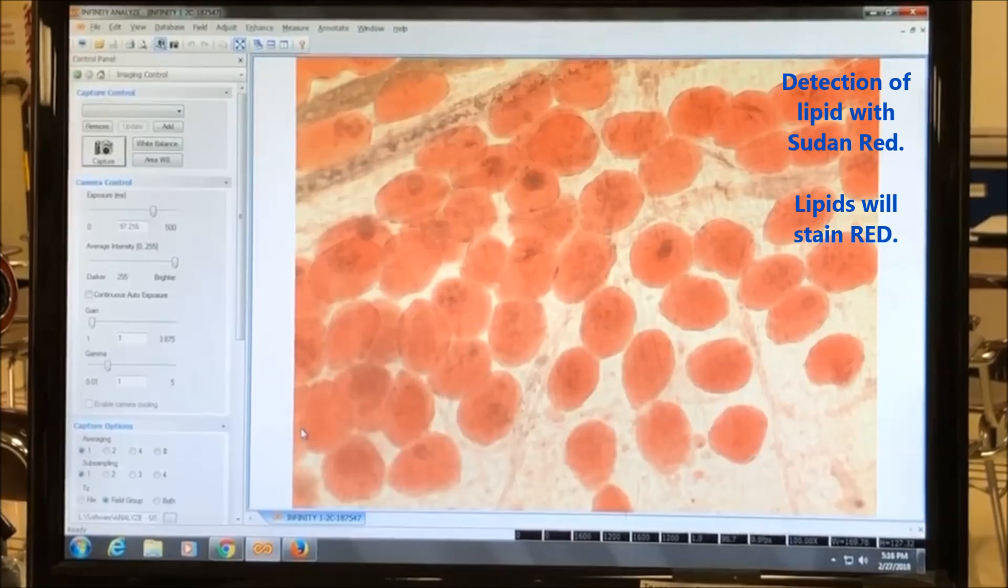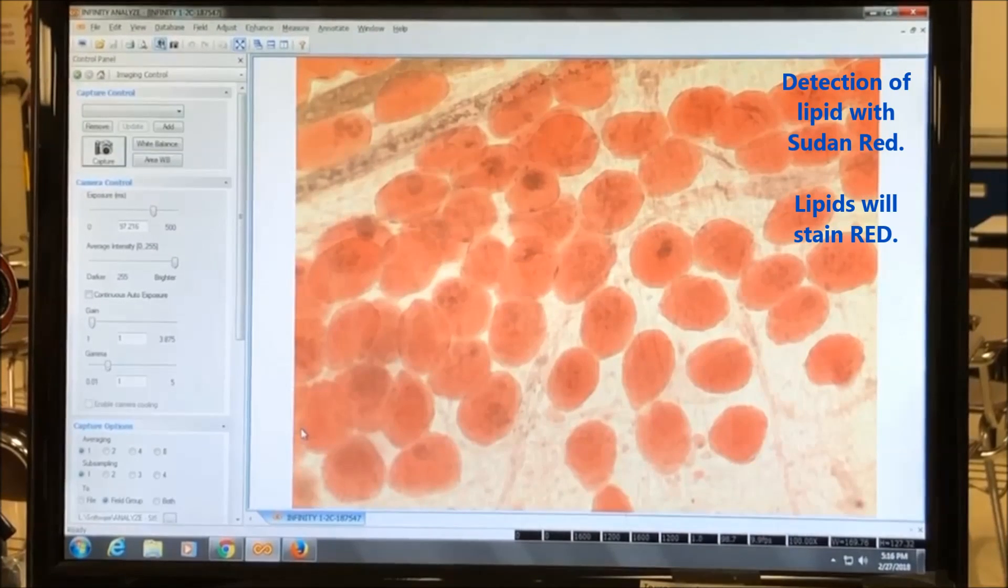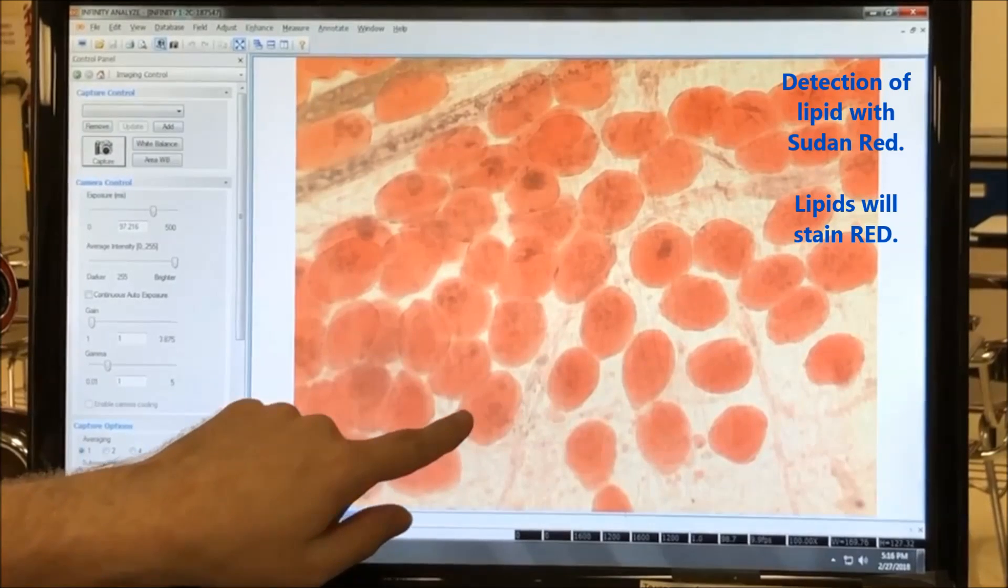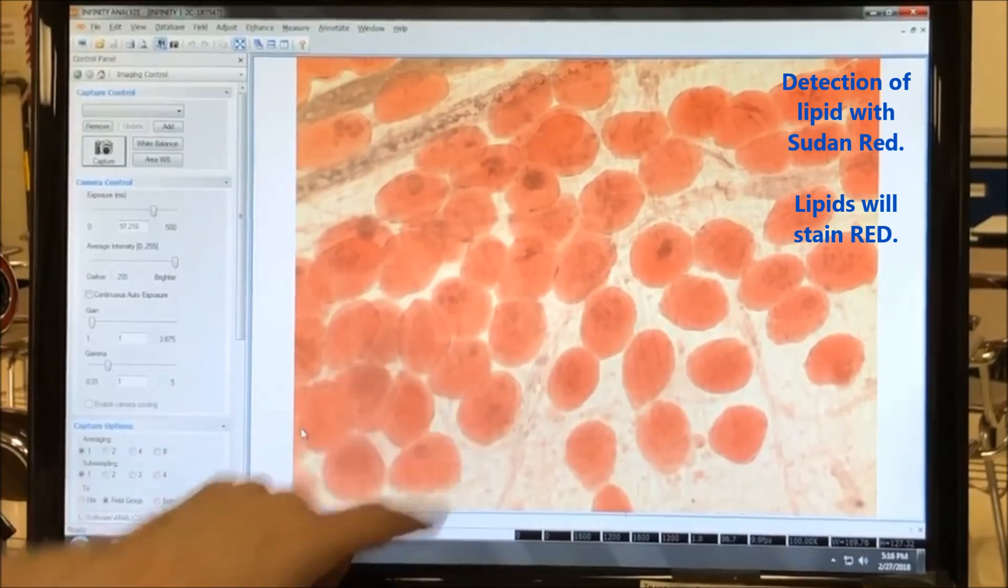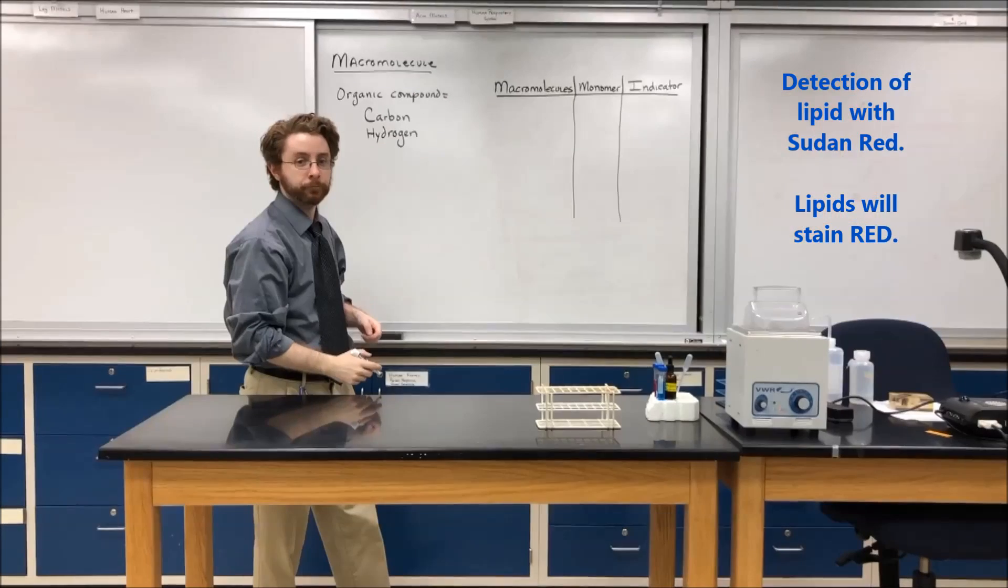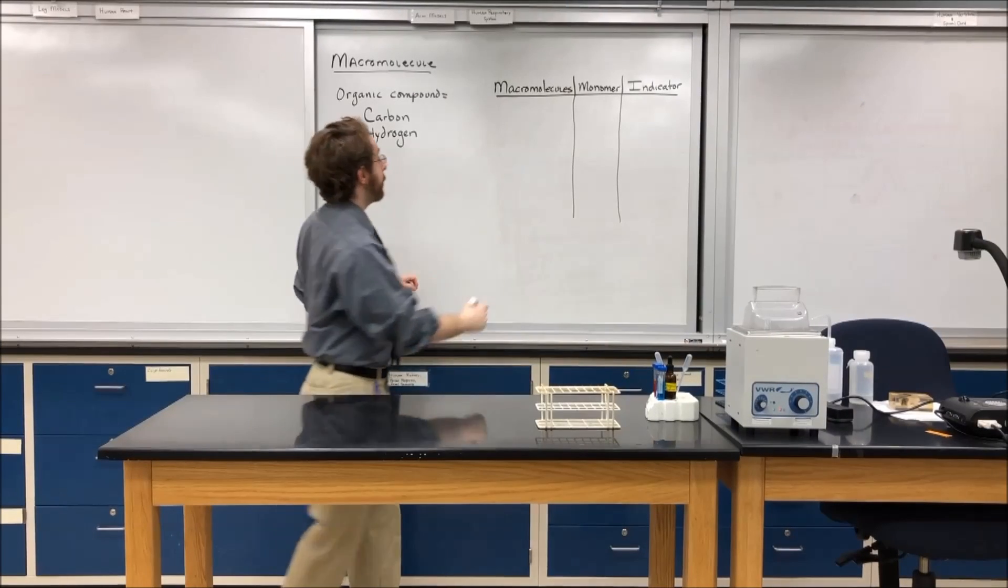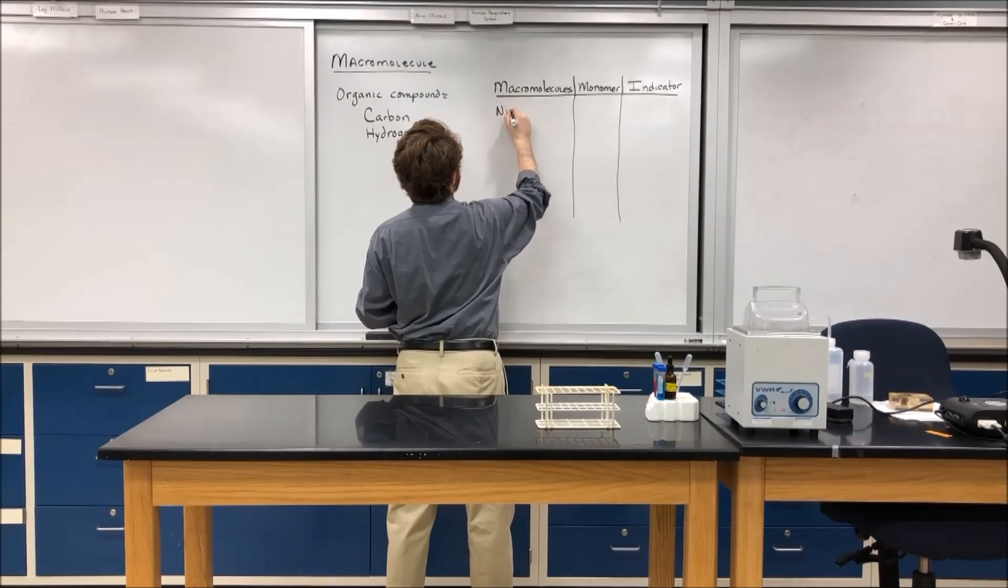To look for fat, we can use Sudan Red as a stain. So this slide here shows adipose connective tissue or fat tissue. And if you can look, you see the red spots here indicate fat bodies.